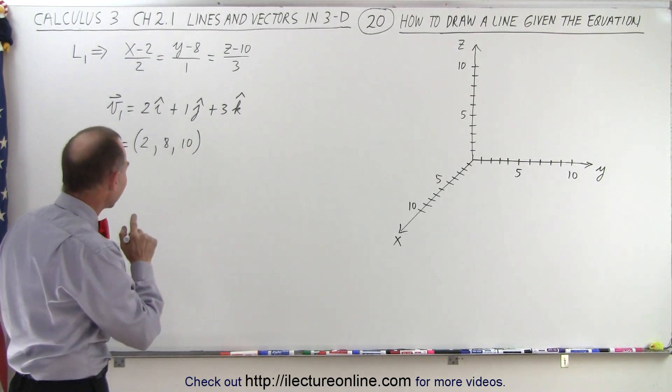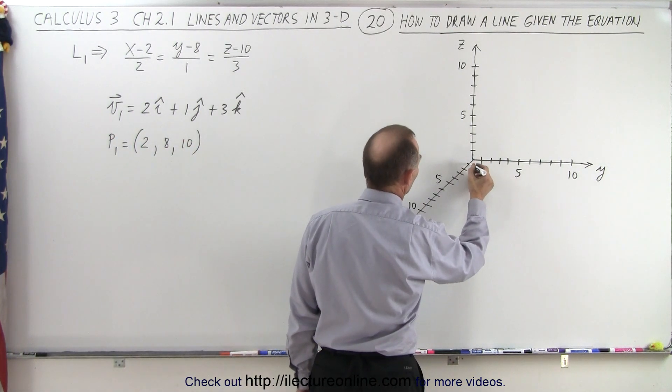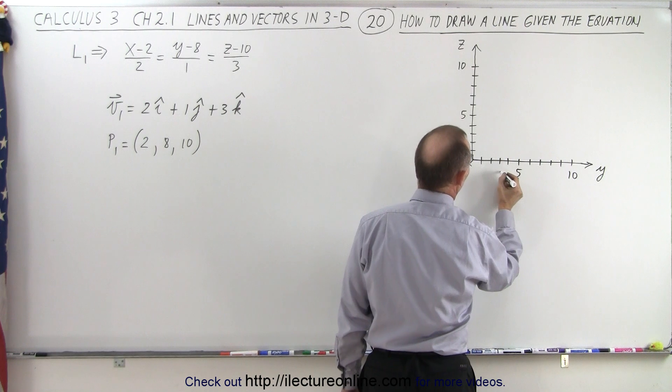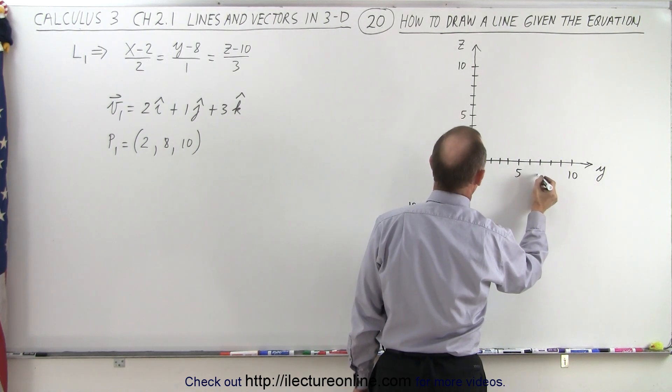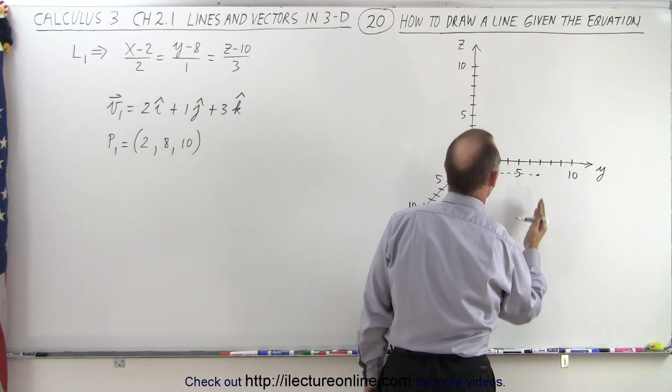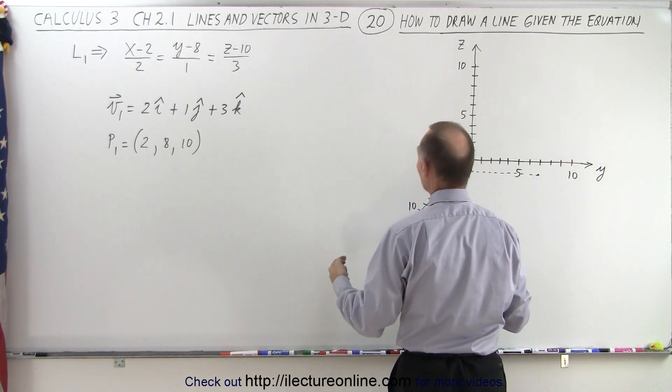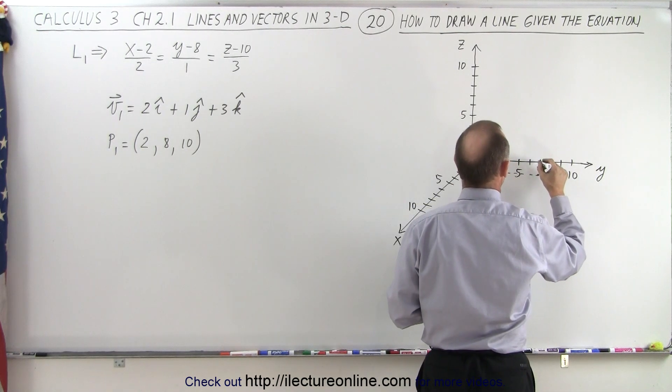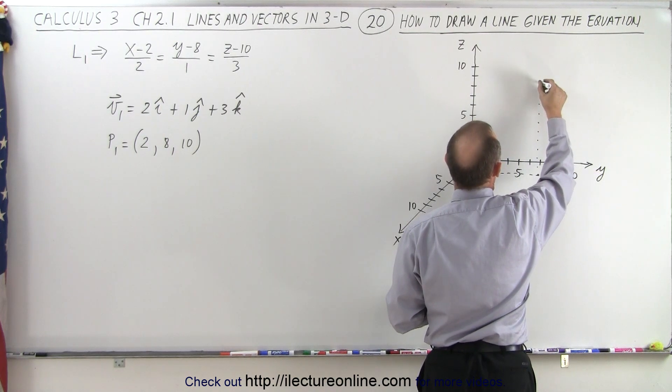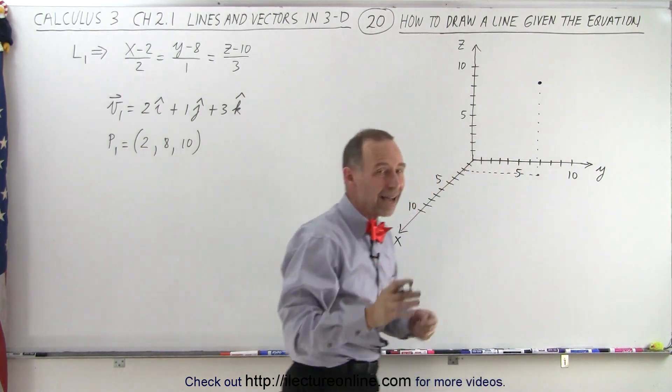So the first thing we should do is find that point on three-dimensional space. First what we do is we go 2 units in the x-direction, then we go 8 units in the y-direction which is 1, 2, 3, 4, 5, 6, 7, 8, so that would be right about here. Now we go upwards in the z-direction. Notice that we are ahead of the y-z plane so now we need to go up 10 units and so that's about 1, 2, 3, 4, 5, 6, 7, 8, 9, 10, so right about there. Notice if we then say this point lies on that line.